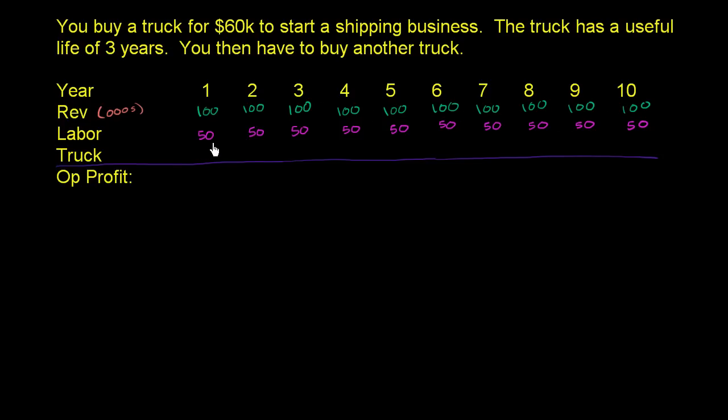And then we have to pay a driver. Let's say that the cost of the labor is $50,000 a year. So once again, this is in thousands. So when you just subtract out the labor cost, you have $50,000 left. And then your other cost is going to be the truck itself. And what I want to think about in this video is how should we account for the cost of the truck?